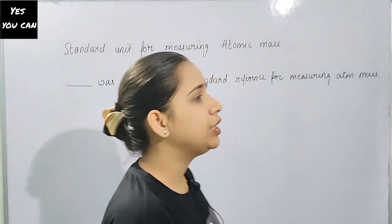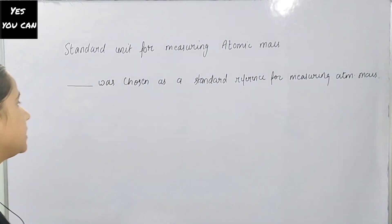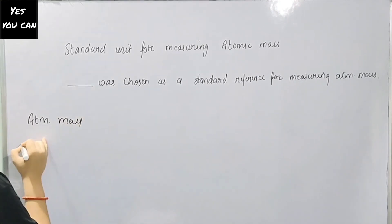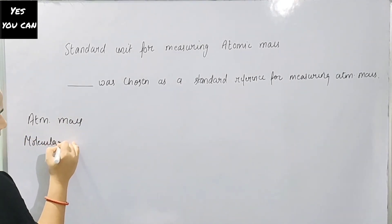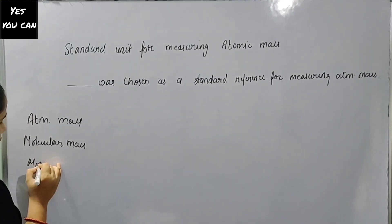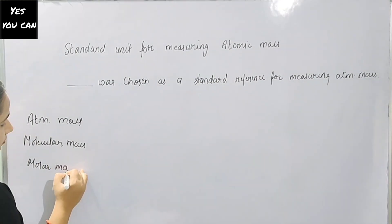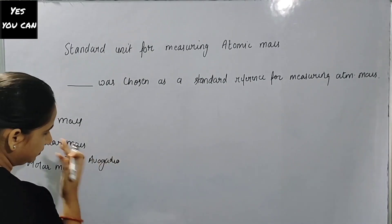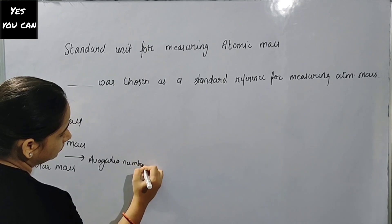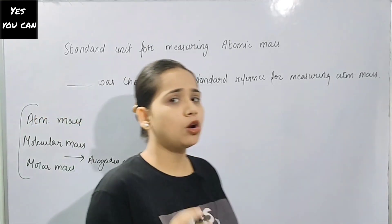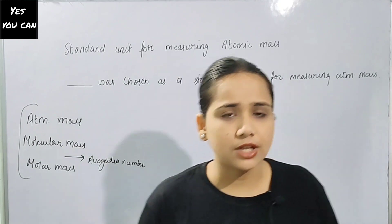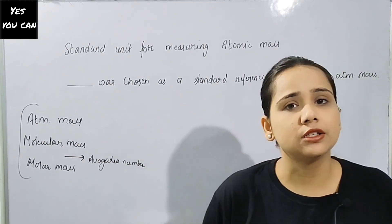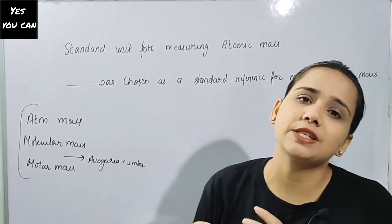For the mole concept, you need to study three concepts. First one is atomic mass, the second one is molecular mass, and then you will come to know the molar mass. And before studying this, you need to understand Avogadro's number. When you understand these three things, the mole concept is much easier and the related numericals you will easily solve. These three concepts are much more important because they are interrelated in your mind.